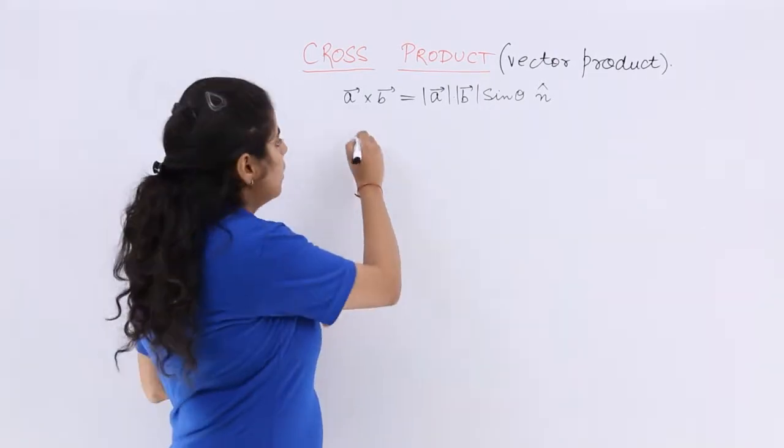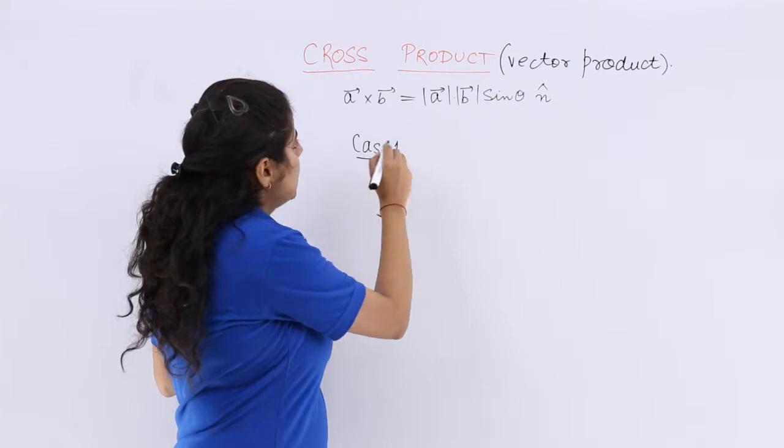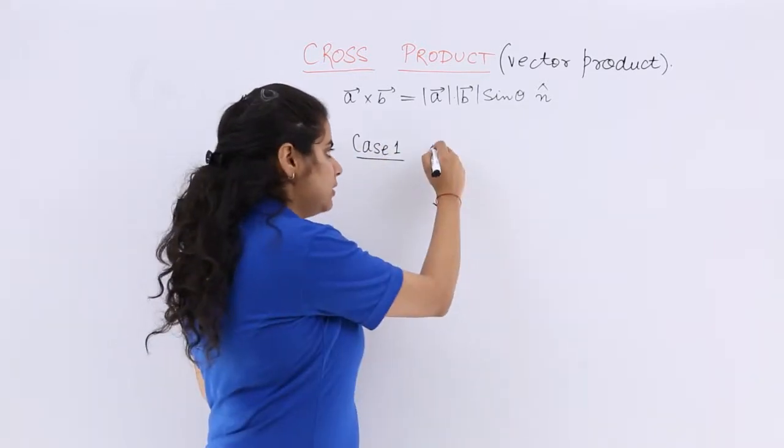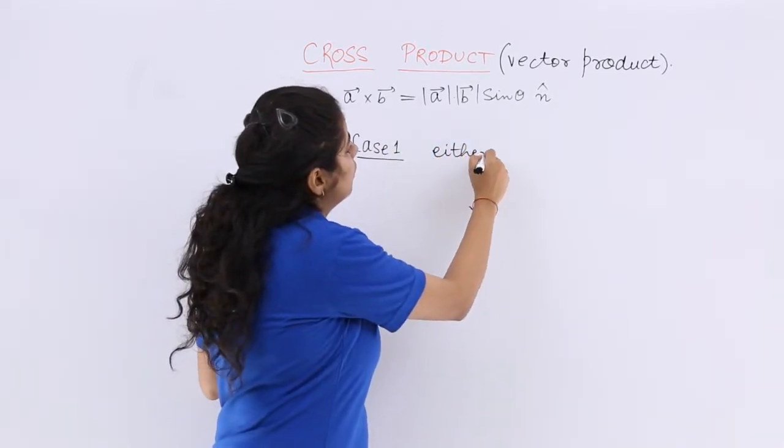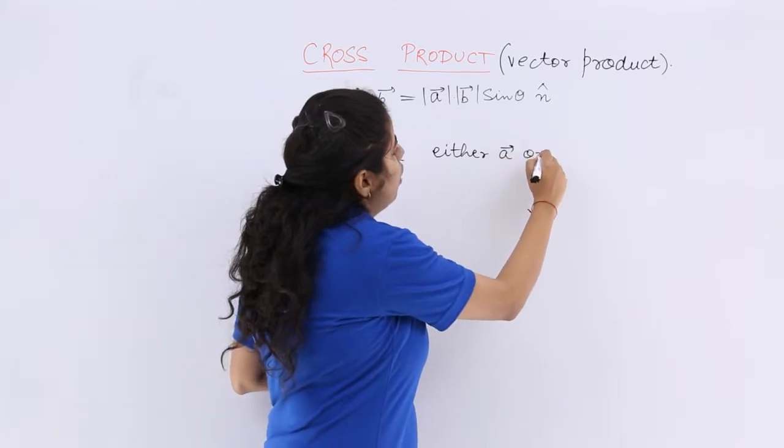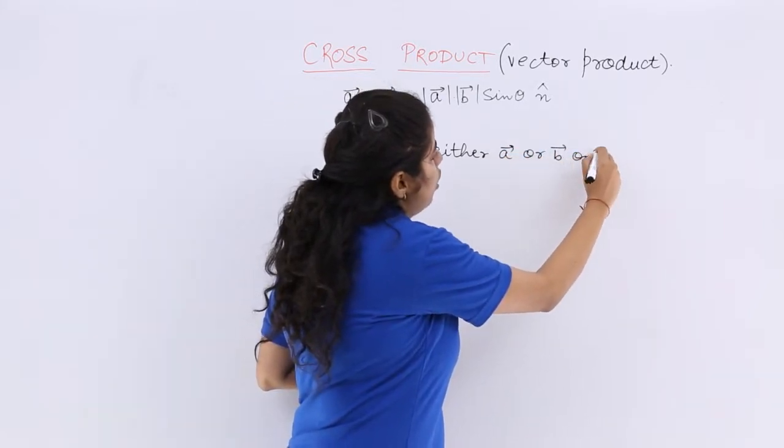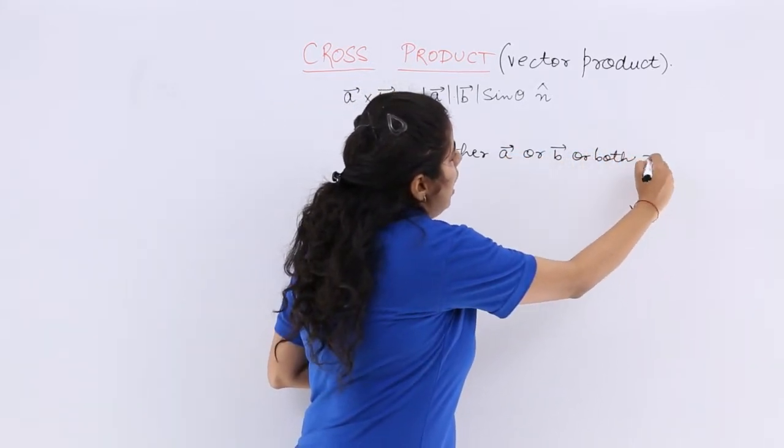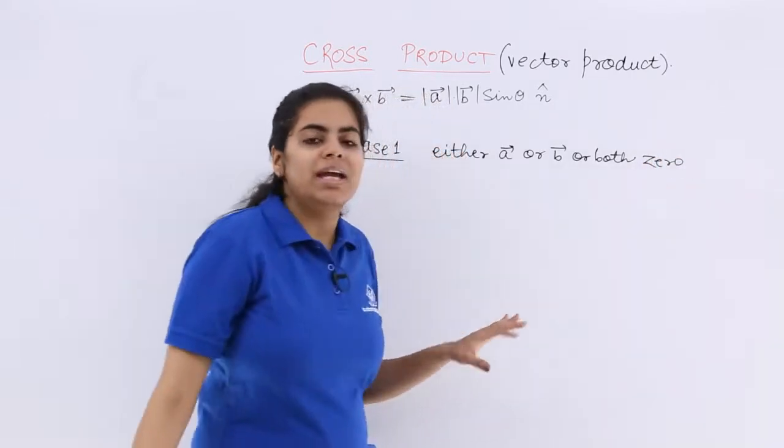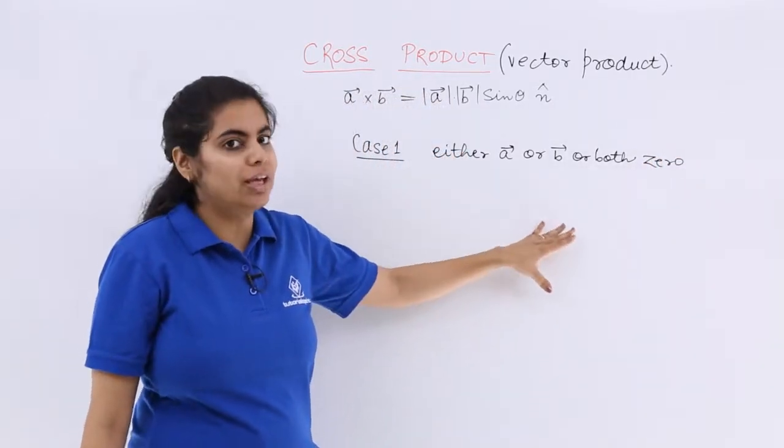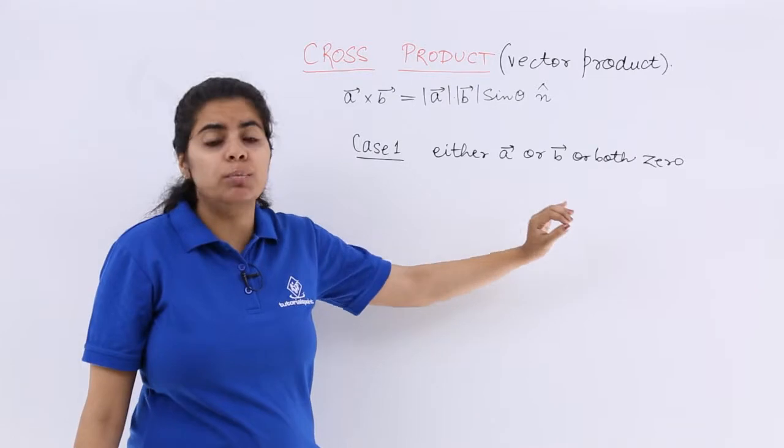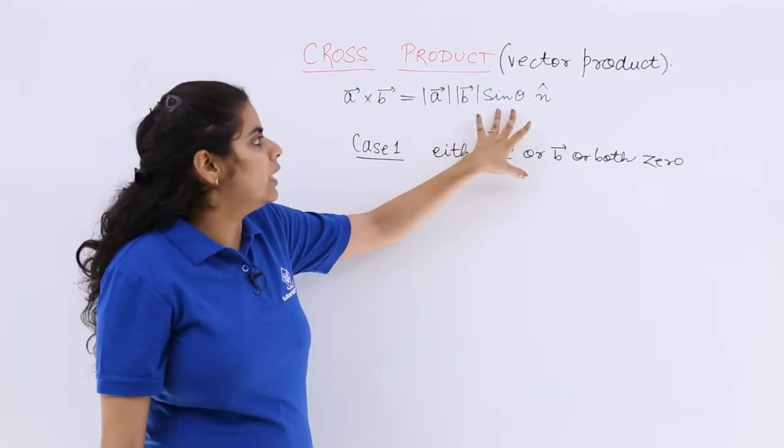Case 1 for our study is when either A vector or B vector or both are 0. If either A vector or B vector or both of them are 0, then what will happen?